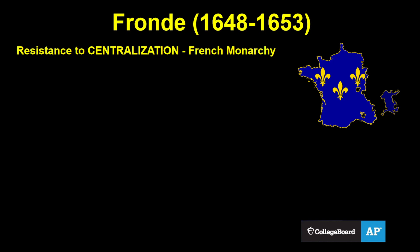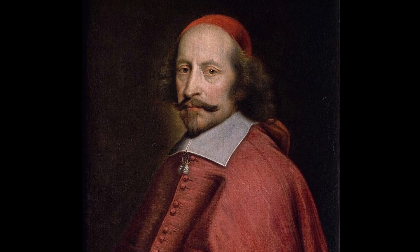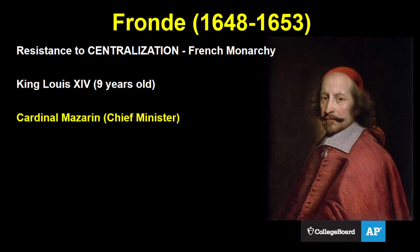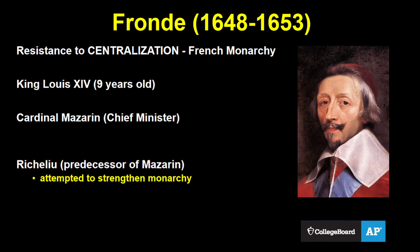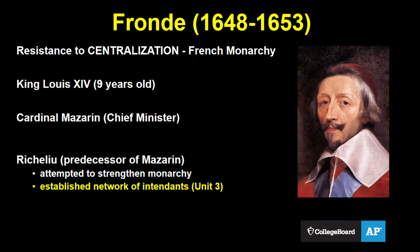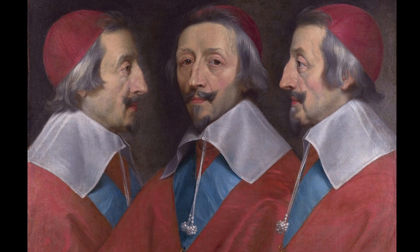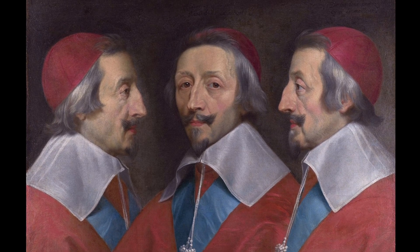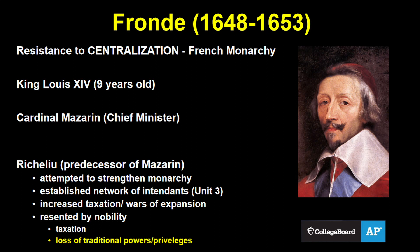Now let's talk about the Fronde in France between 1648 and 1653. This was more of a resistance against state centralization, which occurred during the reign of King Louis XIV — who was only about nine years old at the time. Most of the resentment was actually directed at Cardinal Mazarin, the chief minister. He and his predecessor, Cardinal Richelieu, had done a lot of work to make the French monarchy more powerful. Richelieu had established networks of intendants and greatly increased taxation to fund wars. This was all resented by the nobility, who could see that their traditional powers and privileges were being reduced while the monarchy grew more powerful.